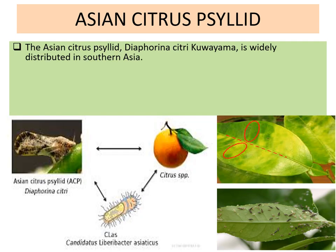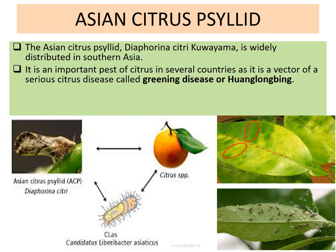The common name for Diapherina citri is the Asian citrus psyllid. It is widely distributed in southern Asia and is an important pest of citrus in several countries, as it is a vector of a serious citrus disease called greening disease, or Huanglongbing.